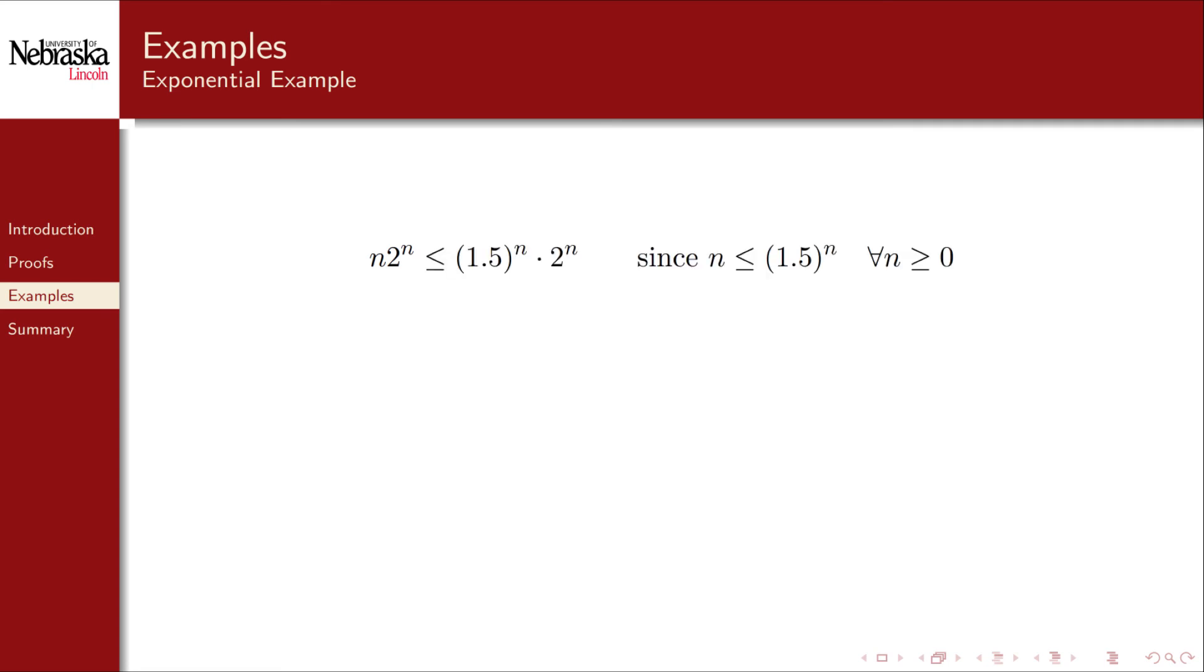Let's try again. A linear function is still bounded by any exponential growing function. In particular, 1.5 to the n is larger than n for all n values greater than or equal to 0. This allows us to collect terms and simplify to 3 to the n. So for c being 1 and n naught being 0, the inequality holds, and we've proven that n times 2 to the n is big O of 3 to the n. That is, exponential functions with larger bases grow faster than other exponential functions with smaller bases.